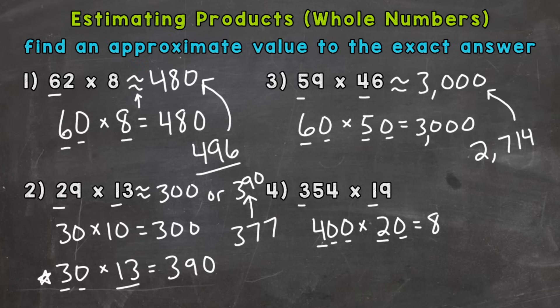And one, two, three zeros, 8,000. So our first estimate is 8,000.